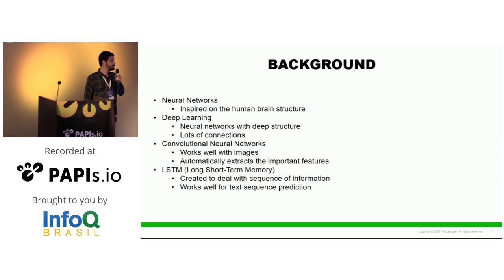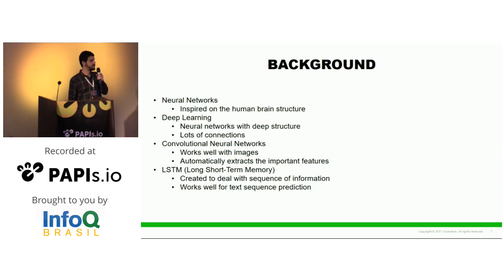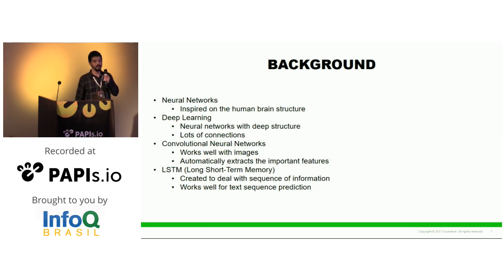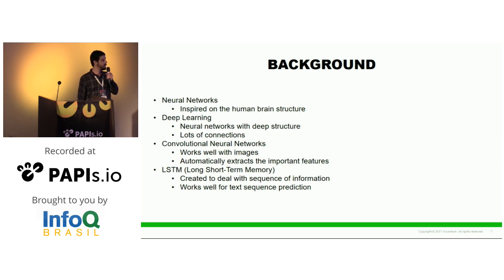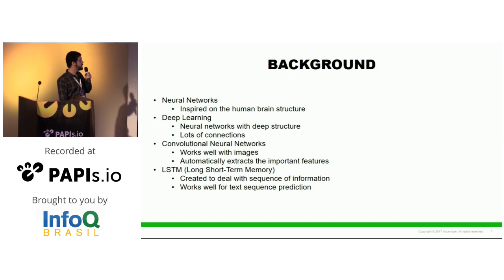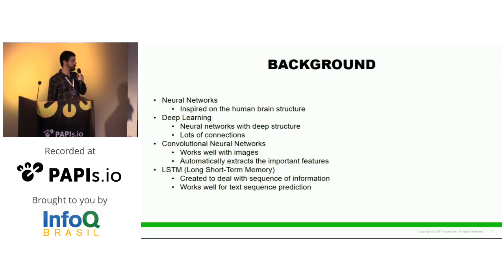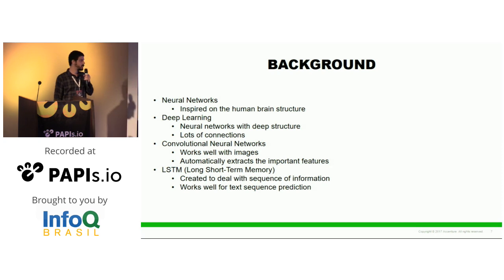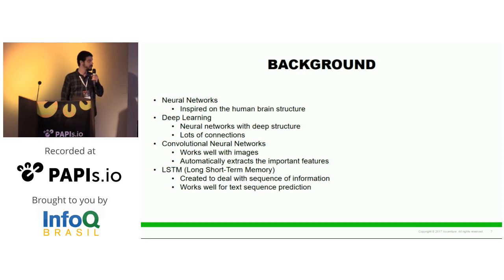Neural networks — you might know about them — are slightly inspired by the human brain. The basic structure is called a neuron, and it essentially combines inputs and applies an activation function, usually nonlinear. You can combine many layers of these neurons to implement a neural network. Deep learning is mainly based on neural networks but is like an extension — nowadays you have a lot of computational power, so you can go deeper, having many layers and different architectures to solve problems.